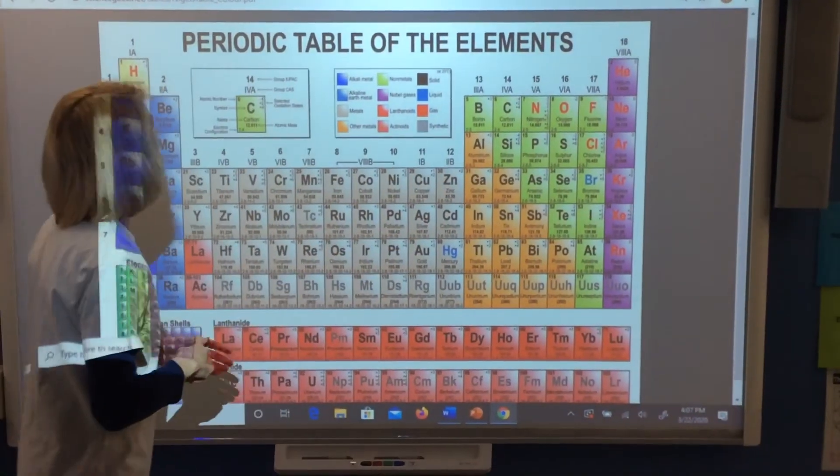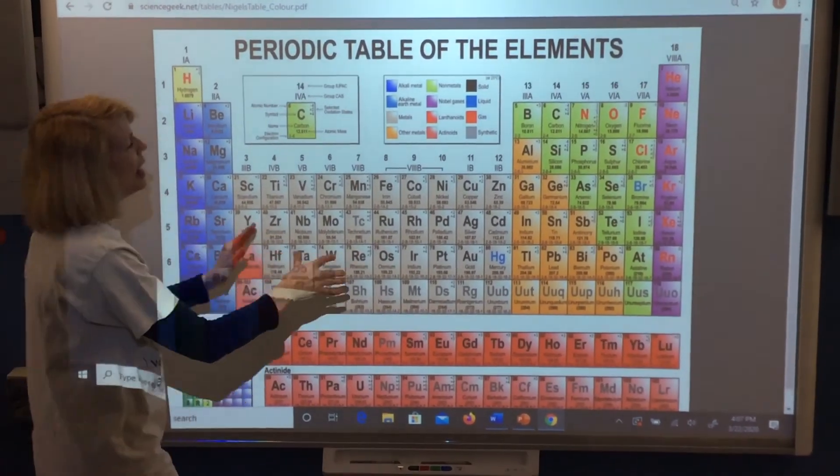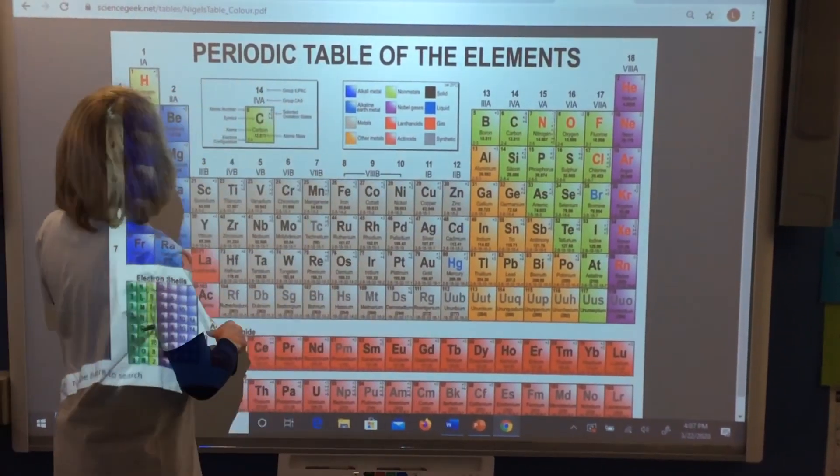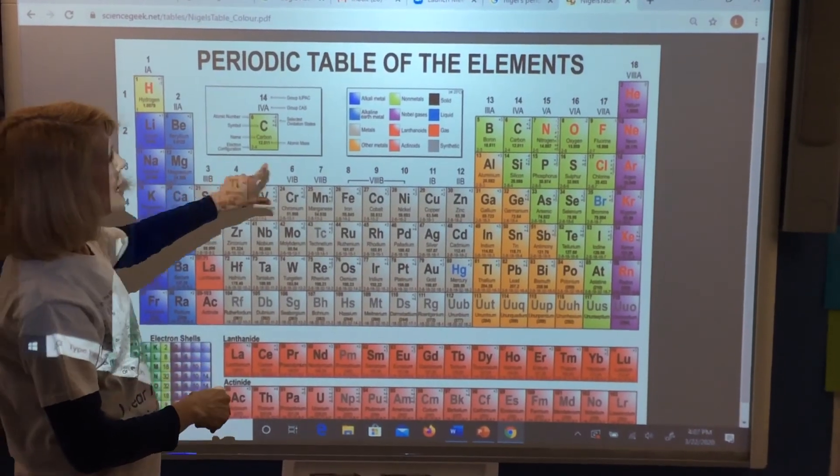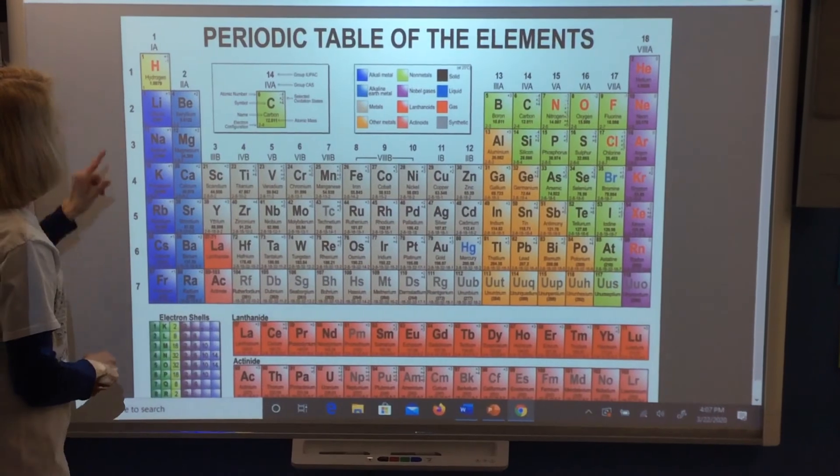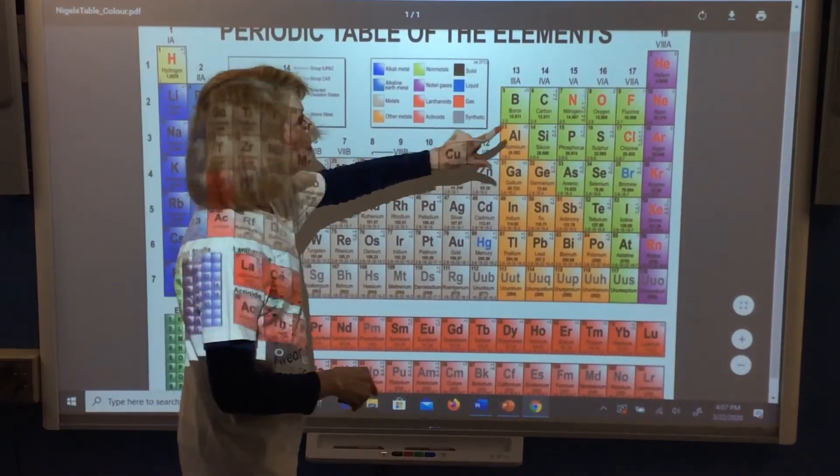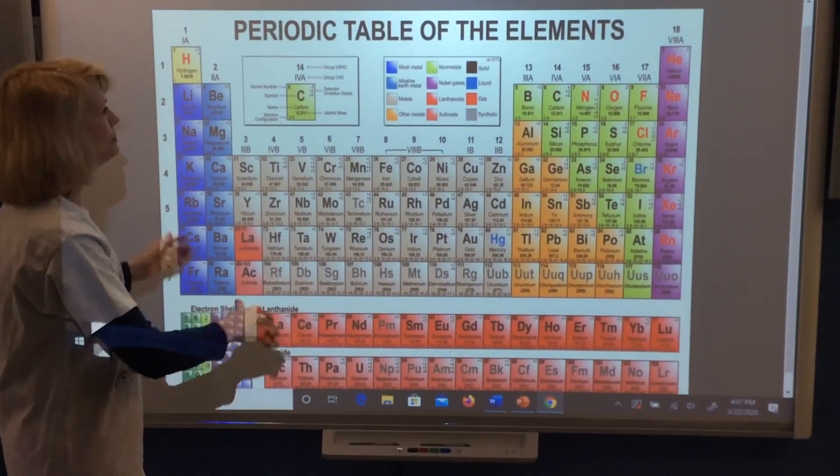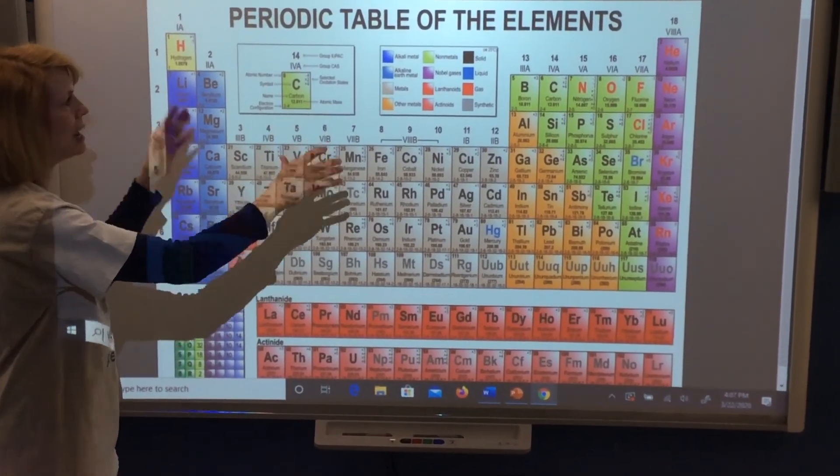An ionic bond forms between a metal and a non-metal. So we have magnesium and we have sulfur. Before, we had lithium and we have fluorine. So an ionic bond always forms between a metal and a non-metal.